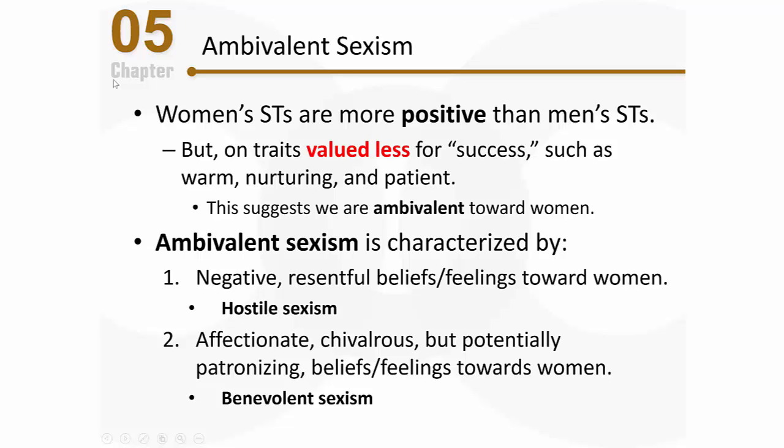What causes ambivalent sexism? Researchers think it arises from two basic facts about relationships between men and women. First, men generally tend to be more dominant in society, and hostile sexism arises because dominant groups naturally view other groups as somewhat inferior. But despite their dominance, men are often highly dependent on women for the roles they serve — as wives, mothers, and romantic partners — and this dependence fosters benevolent sexism, where men see women as valuable and attractive.